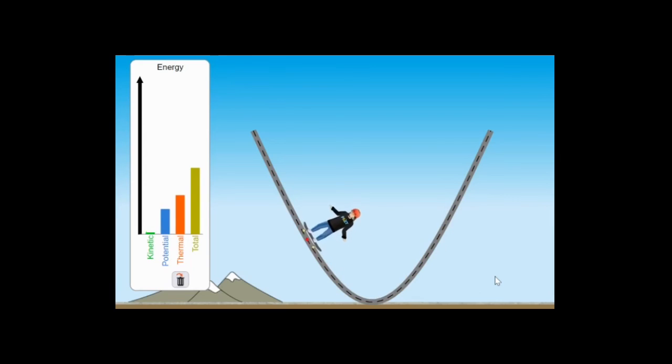So although it looks like the energy is being lost or maybe changed completely, really what's happening is it's just transforming into different types and causing the person's motion and position to change. But overall, the total amount of energy is the same. It's just distributed differently between kinetic, potential, and thermal energy.